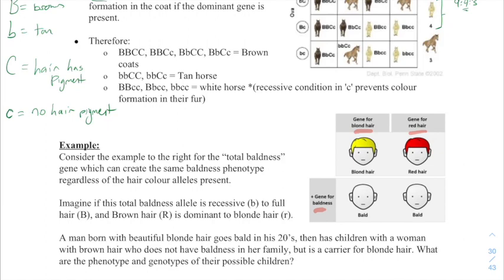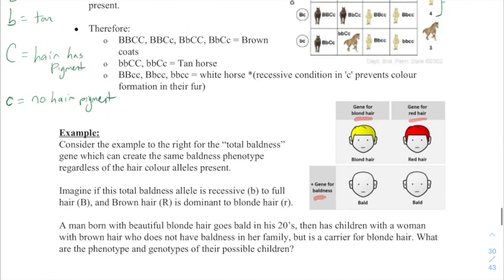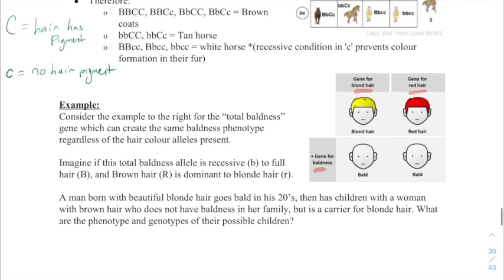So, consider the example to the right of total baldness gene, which can create the same baldness phenotype, regardless of the hair color genes that they carry. Imagine if this total baldness allele is recessive to full hair, and brown hair is dominant to blonde hair, or I guess red hair in this case. A man born with beautiful blonde hair goes bald in his twenties, then has children with a woman with brown hair who does not have baldness in her family, but is a carrier for the blonde gene. What are the phenotypes and genotypes of the possible children? So, I guess this is an example question. It's different from the one we've got here, but so let's, so following this logic here, we have a man born with beautiful blonde hair.